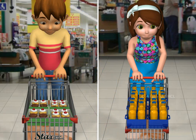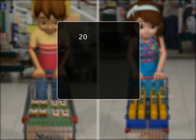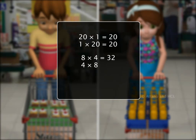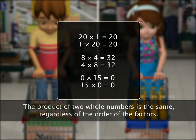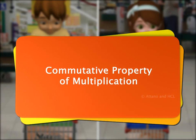Take a look at these examples of multiplication of whole numbers. Notice that regardless of the order in which the numbers are multiplied, the product is the same. This property is known as the commutative property of multiplication, and we say that whole numbers are commutative under multiplication.